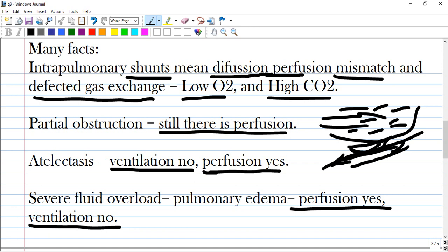Partial obstruction means that there is still perfusion. Decreased but perfusion is present and exchange will occur. Atelectasis means ventilation is not present but perfusion is. Severe fluid overload means pulmonary edema where perfusion is present but gas do not exchange through this drowned alveoli.